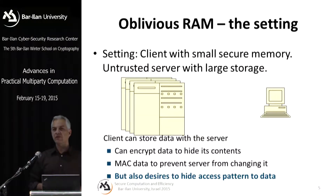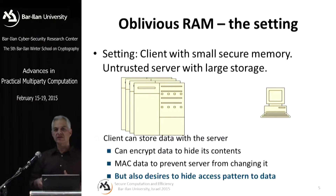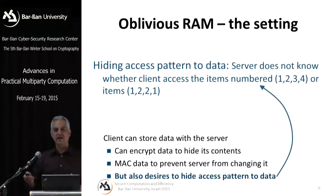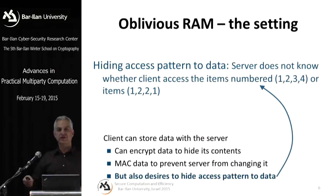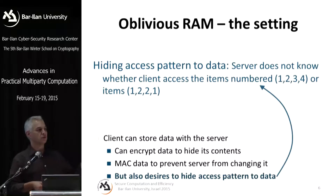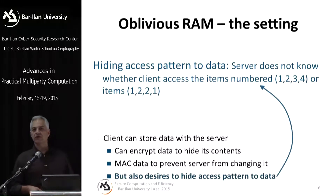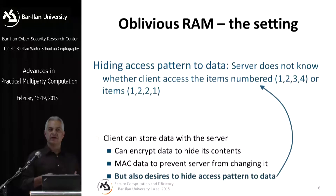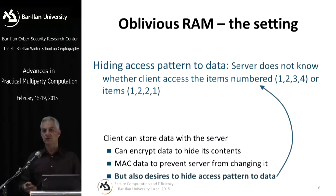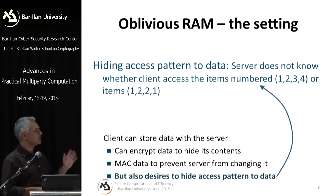Suppose the client also wants to hide the pattern with which it accesses the data — it doesn't want the server to learn which items have been accessed. For instance, in one interaction the client accesses items numbered one, two, three, and four; in another it accesses one, two, two, and one; or it just accesses item number seven four times. The server should not learn which items were accessed in each interaction, because by learning the access pattern it might learn a lot about what the client is doing. So we want to hide the pattern of accessing data.